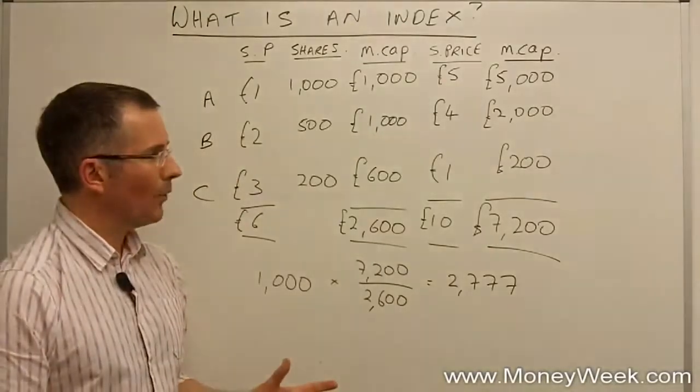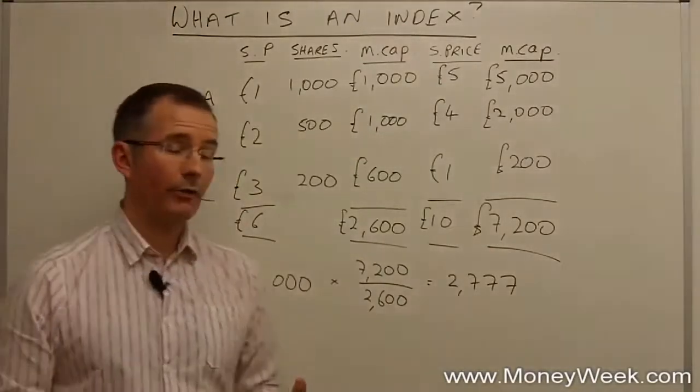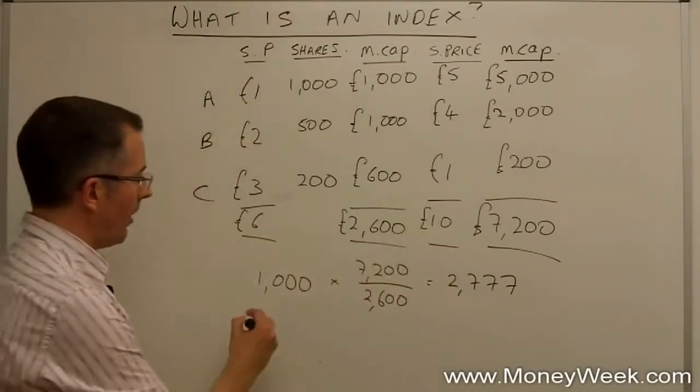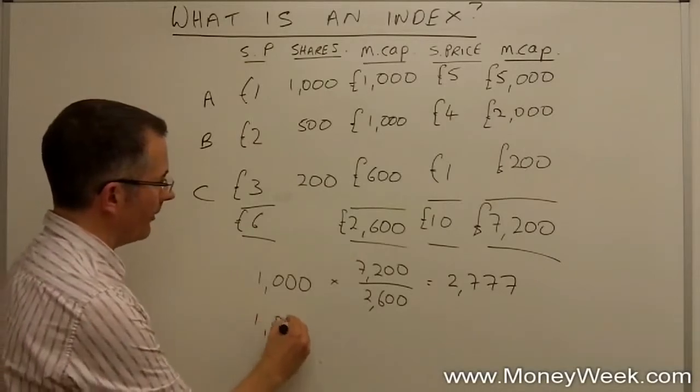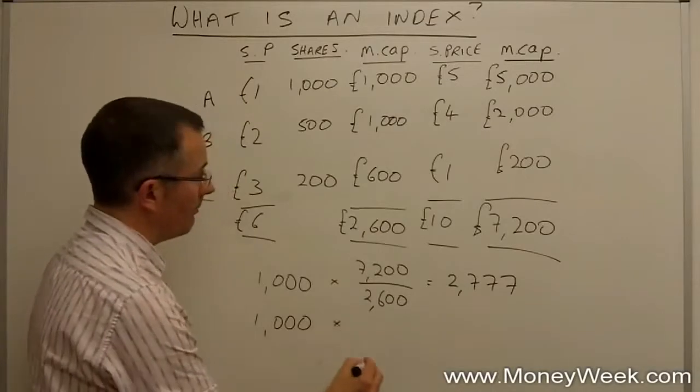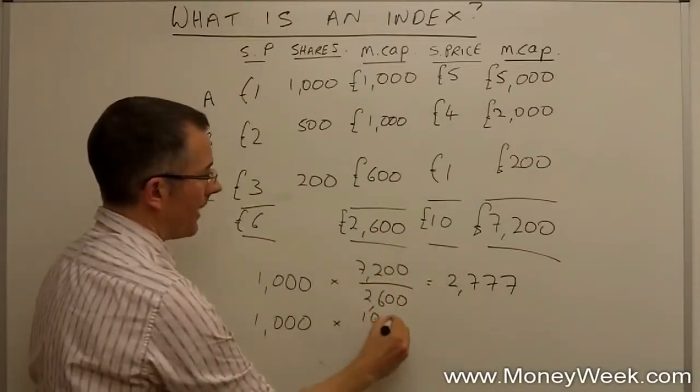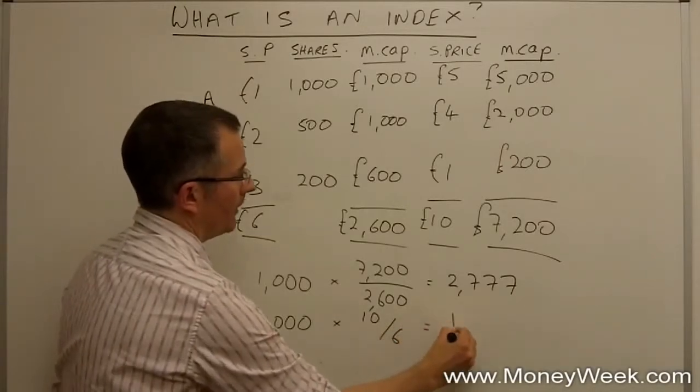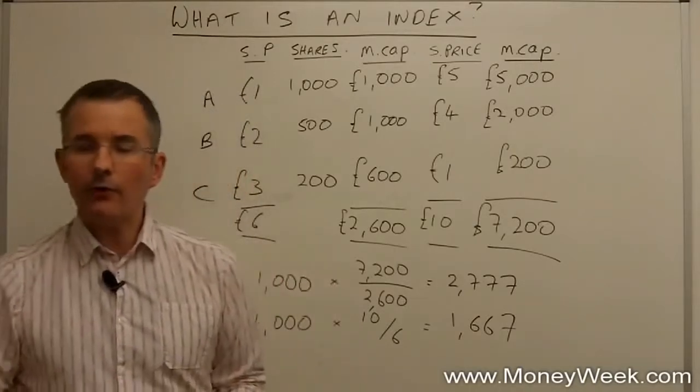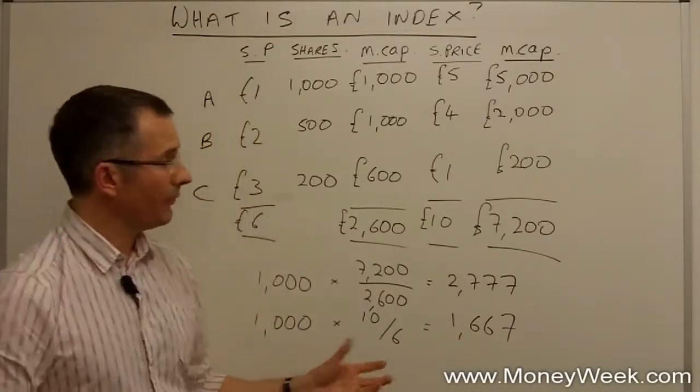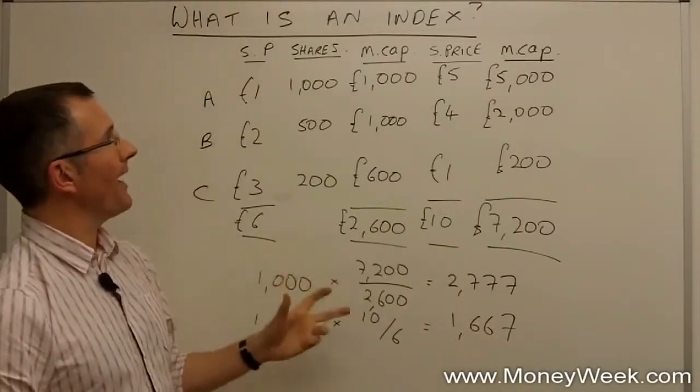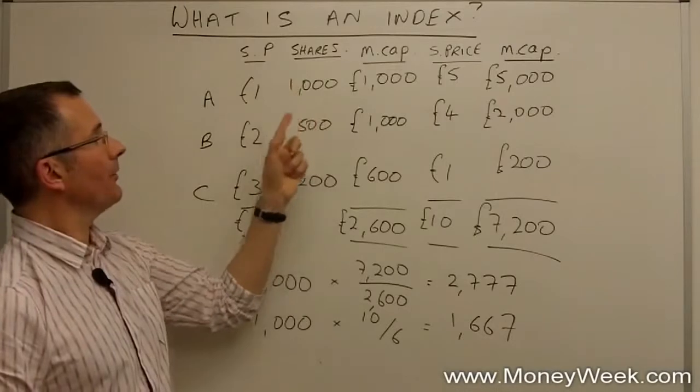But is there another way to look at this? What if I take the Dow Jones approach in the US and just do it on share prices? In which case, my 1000 index, 1000 is an arbitrary figure, I could have started at 100, but most started at 1000, multiplied by the share price now, and the share price as it was a year ago, gives me more like 1,667. So, you can see, using share prices, the index has gone up, but not as far as using market capitalisations.